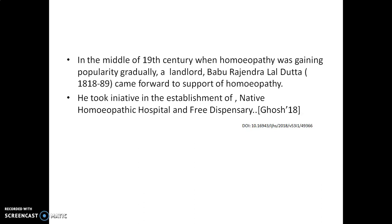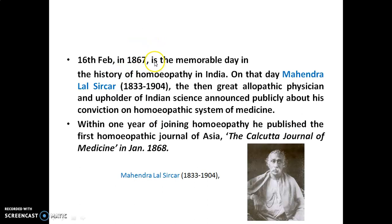In the middle of the 19th century, as homeopathy was gaining popularity in Eastern India, Kolkata landlord Babu Rajendra Lal Dutta came forward to support homeopathy and established a native homeopathy hospital and free dispensary. The 16th of February 1863 is a memorable day in the history of homeopathy in India, when well-known physician Mahendralal Sircar officially declared his conviction in the homeopathic system of medicine. Within a year of joining homeopathy, he published the Homeopathic Journal of Asia, the Calcutta Journal of Medicine, in January 1868.